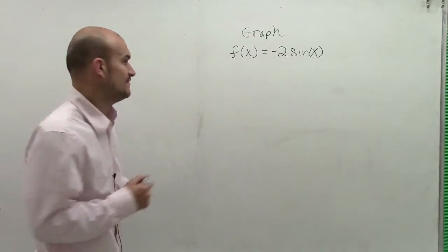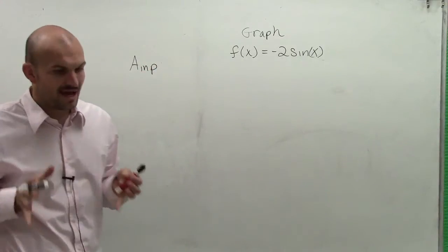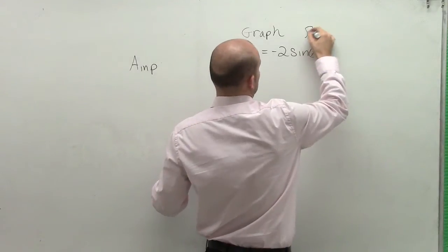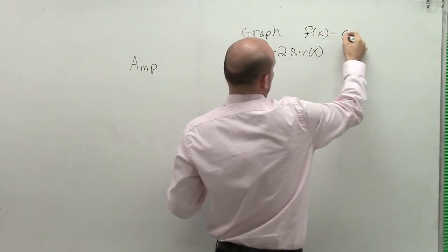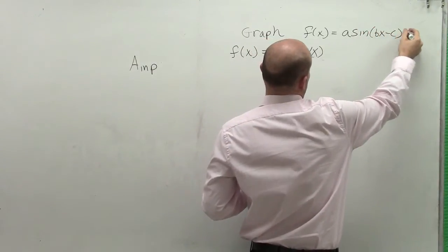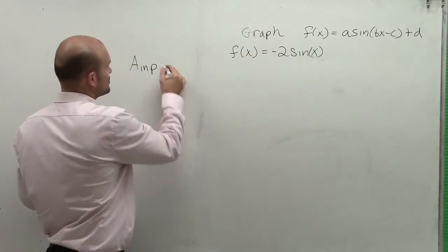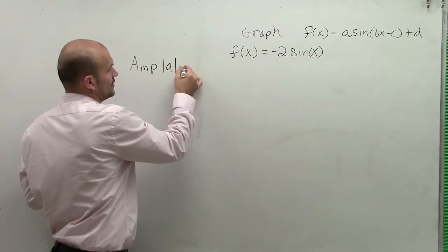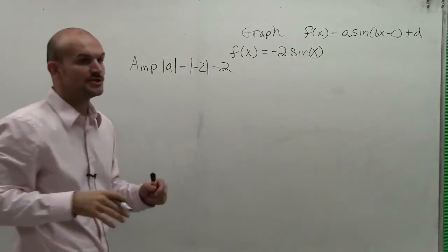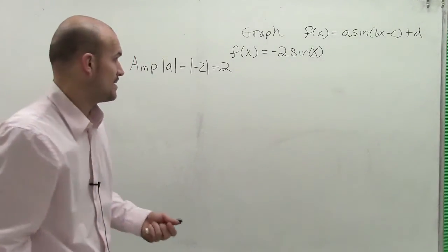The first thing I always like to figure out is the amplitude. So remember, if we're going to look at our standard form of our function, f(x) = a·sin(bx - c) + d, the amplitude was the absolute value of a. Well, in this case, we have -2 is our a value. So therefore, the amplitude is going to be 2. That means 2 is going to be my half distance from my maximum to my minimum point on my graph.